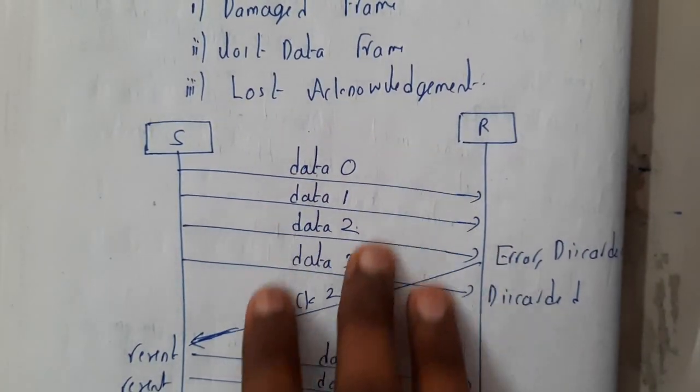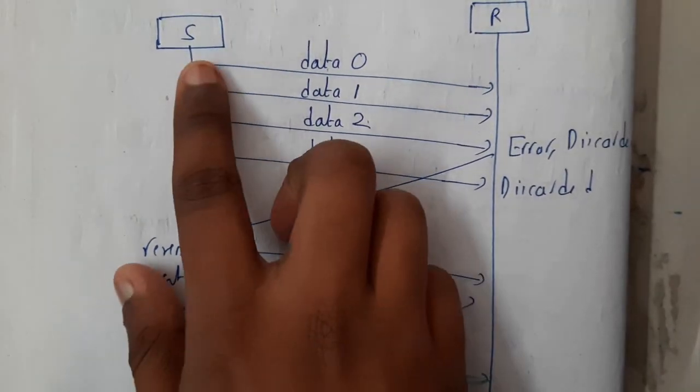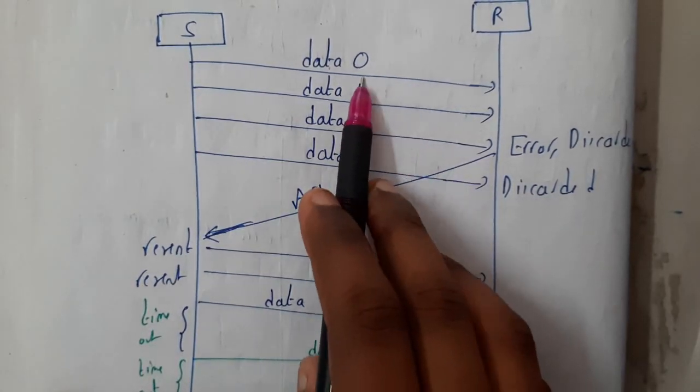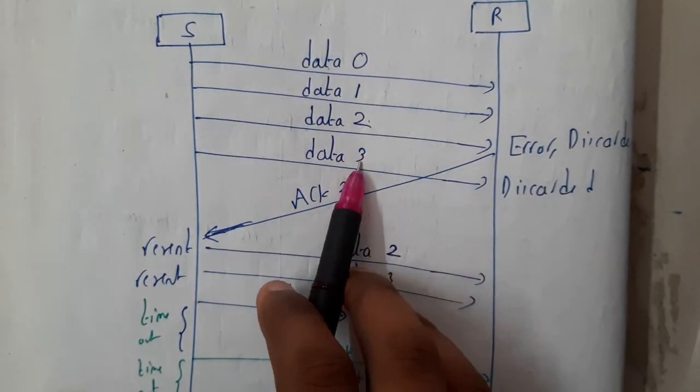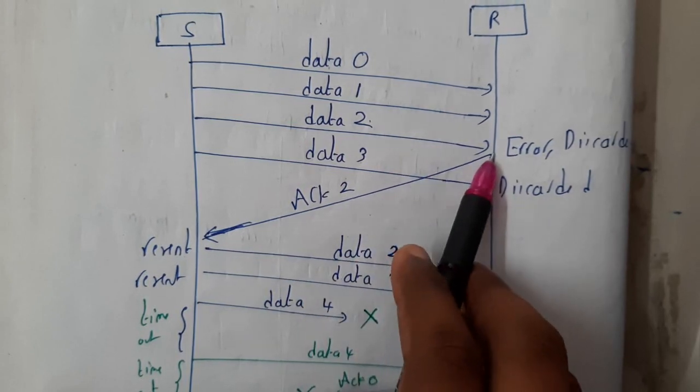Let us go through the diagram first so that you will have a clear idea. Let us assume we are having a sender and receiver. You are sending the data packets like data 0, data 1, data 2, data 3. You are sending the data and let us assume there has occurred an error at...